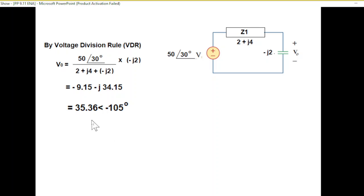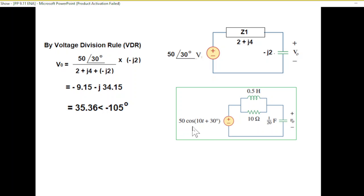This is in polar form; we go back to rectangular form. Remember the question was in cosine form, so we write the answer as v₀ = 35cos(10t - 105°). I hope you've been able to follow this. Please let me know through your comments.